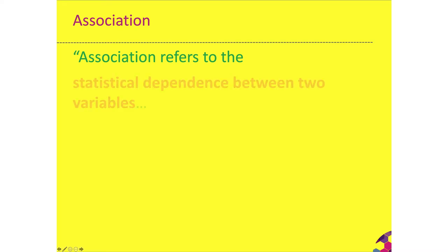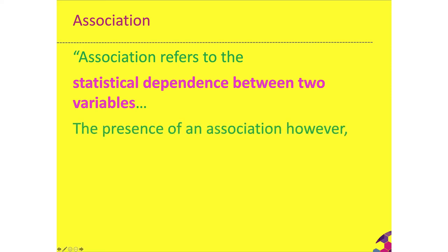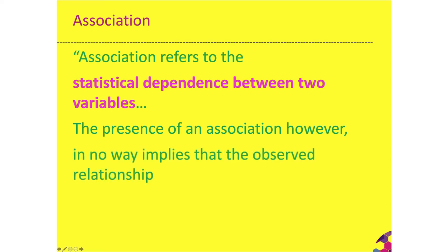What is an association and how does it relate back to a cause? Association refers to the statistical dependence between two variables — an exposure and a health outcome. It's a statistical relationship between them. However, the presence of an association does not imply that the relationship we see in our study is a cause-and-effect relationship. It just means we have found a link between an exposure and an outcome, and we would need more studies, analysis, and evidence from biology and medicine to say for certain that one exposure causes one health outcome.